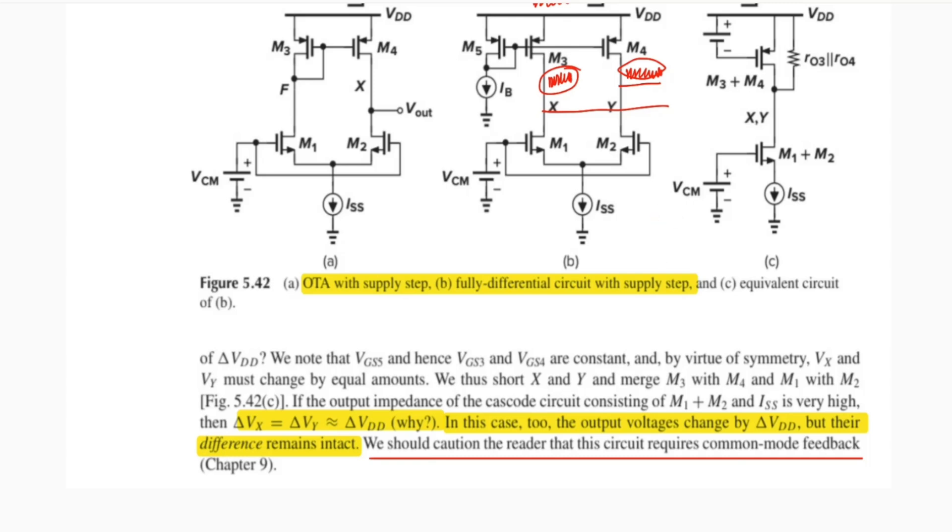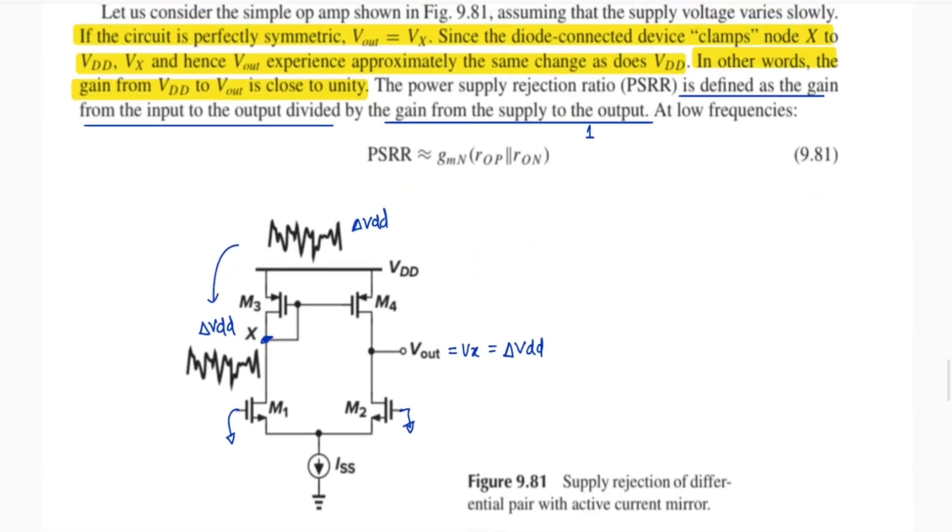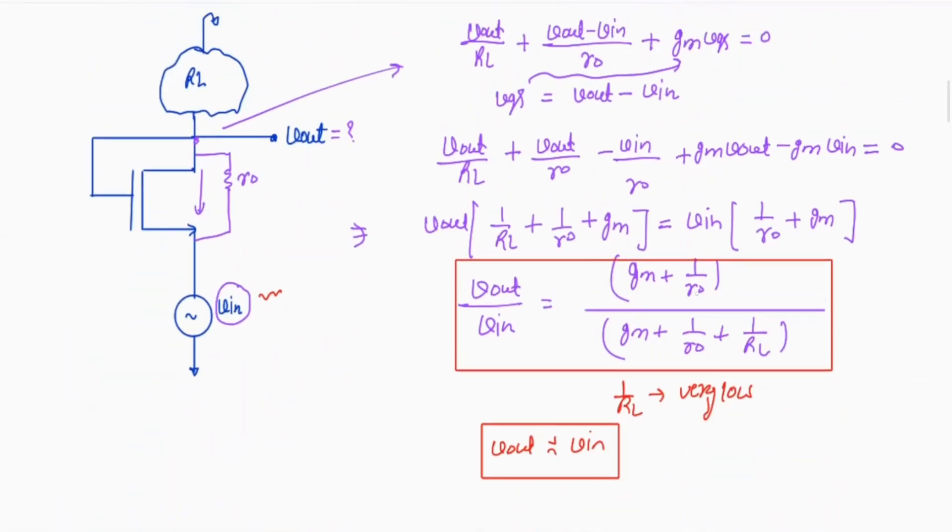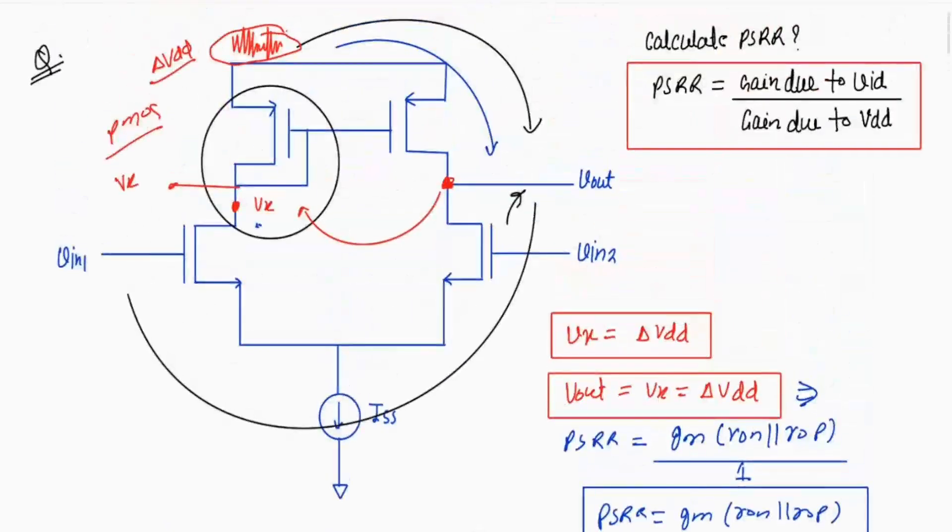But we need a common mode feedback, so you can read from here. This is 5th chapter and this structure is in the 9th chapter. I hope you got what I want to say. Please let me know if you have any doubt. I have mentioned that reference from where I have taken, you can go through that and you can read. Okay, bye, thank you.